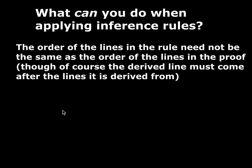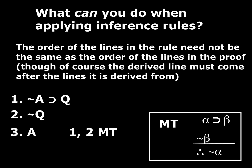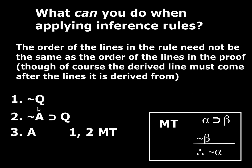Next: what can you do when applying inference rules? There are some things students don't realize they can do, but they can, and sometimes that can make your life a little easier. First, the order of the lines in the rule — in the written schematic — doesn't have to match the order in the proof. For modus tollens, the conditional is first and the negated consequent is second in the schematic, but in your actual proof the conditional could appear after the negated consequent. They don't even have to be next to each other; they just have to each be on lines by themselves.